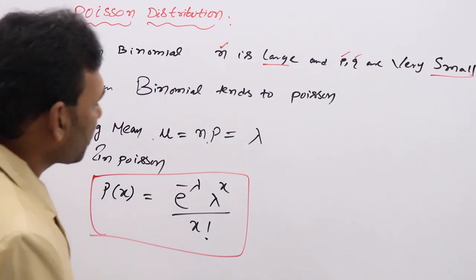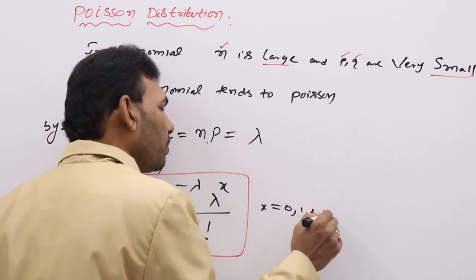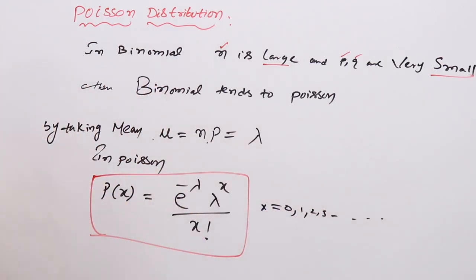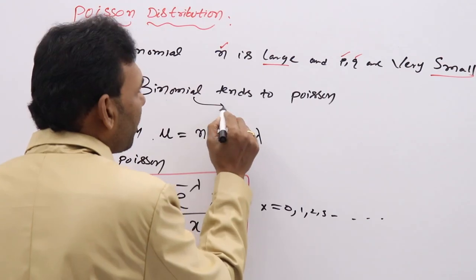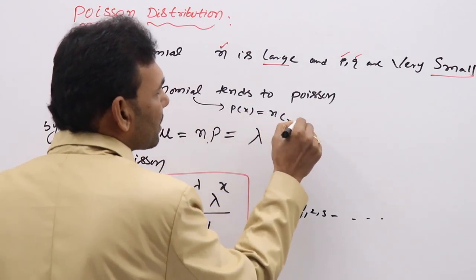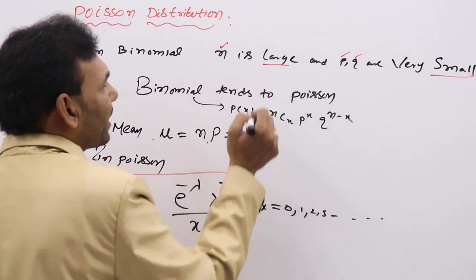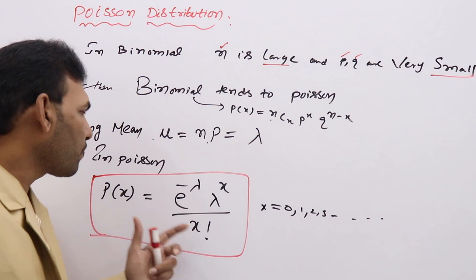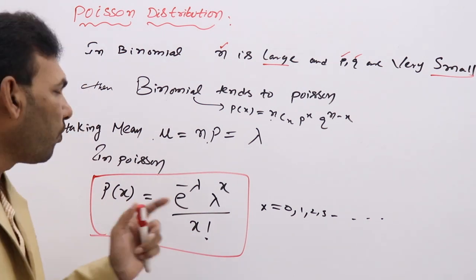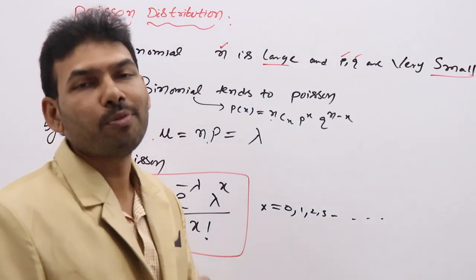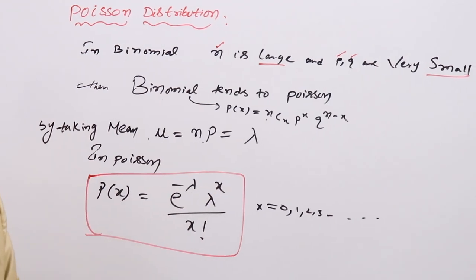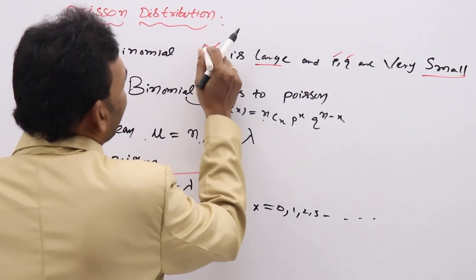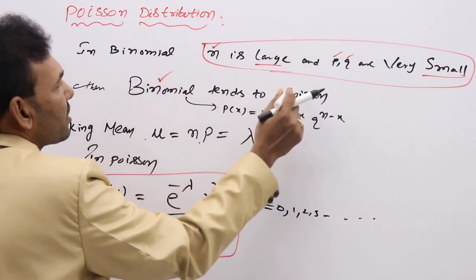This is the formula to calculate any probability in Poisson distribution. It is derived from binomial distribution by taking x = 0, 1, 2, 3, so one can easily evaluate probabilities. In binomial, P(x) = nCx × p^x × q^(n−x). By taking n large and pq small, the Poisson formula was derived. Keep this point in mind: n large, p small — binomial tends to Poisson.